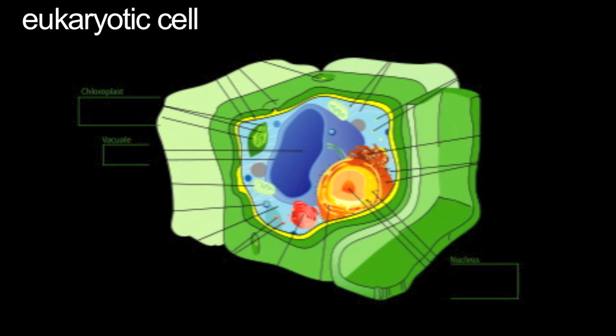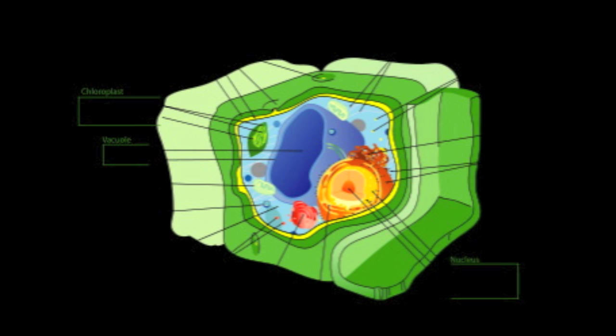Eukaryotic cells have a nucleus and membrane-bound organelles. Eukaryotic cells are complex cells and are plants, animals, and fungi.